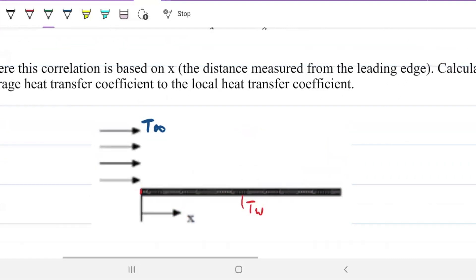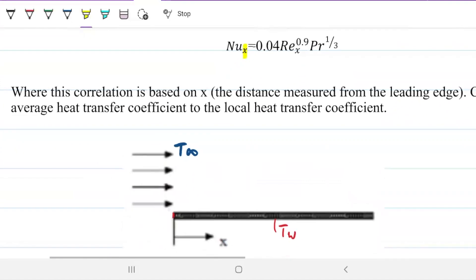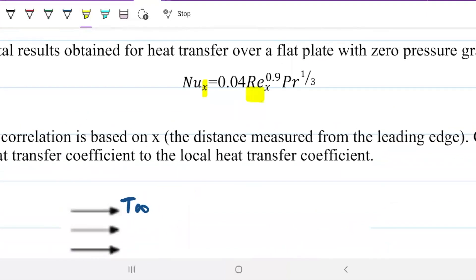So this equation here is telling me the following. The Nusselt at any x, so here, here, here, here, here, or here, any of the Nusselt that I want to determine is equal to 0.04 of the Reynolds on the same point.